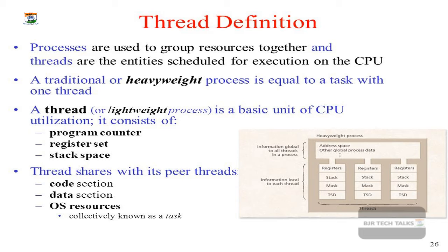A process can contain one thread or many threads. If a process contains only one thread, it has a single line of control of execution. If it contains more than one thread, it has multiple lines of control of execution. The simplest lightweight job within a process is called a thread.